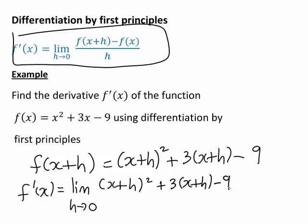So that is (x+h)² + 3(x+h) - 9 minus f(x) which was our original function, so minus (x² + 3x - 9), and then divided by h.